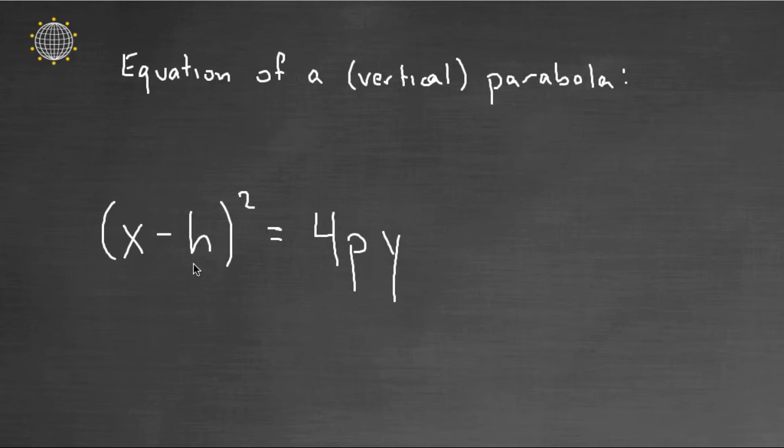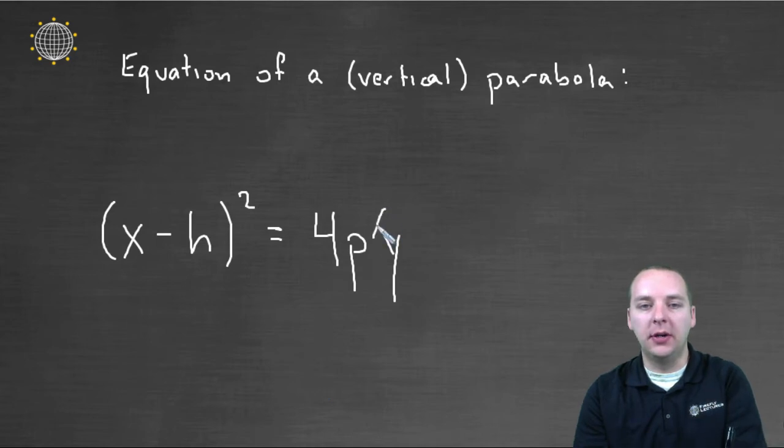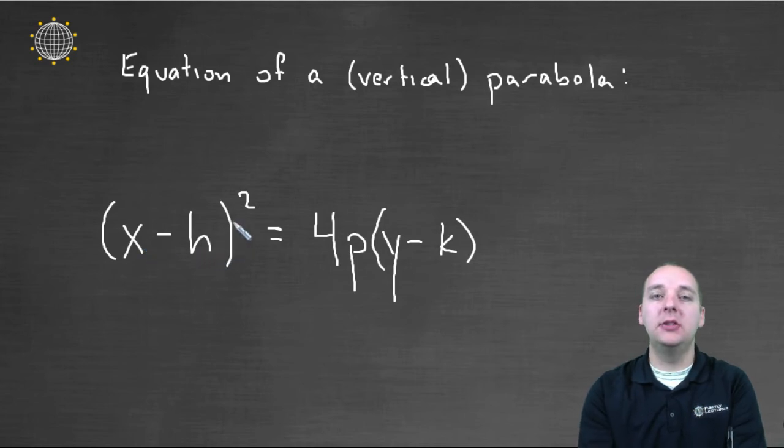Well it's this. It's (X minus H) squared equals 4P(Y minus K). Where H is actually, I'm missing a term here. Should be Y minus K. Sorry, I left that term off there. Sorry about that. It's (X minus H) squared equals 4P times (Y minus K).